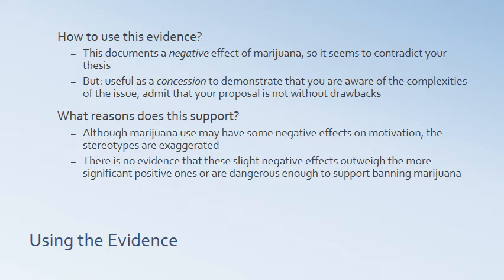But this source is useful as a concession to show that you understand the counter-arguments, that the issue is complex, and that you admit your proposal has some drawbacks or questions that need to be considered. You could say: although marijuana use may have some negative effects on motivation, the stereotypes are greatly exaggerated. And ultimately, these slight negative effects do not outweigh the much more significant positive ones, and they're not dangerous enough to support banning marijuana — since there are all sorts of things that make people less goal-oriented. It's always important to acknowledge potential counter-arguments and respond to them in a way that doesn't take away from your argument, but overall strengthens it, even while showing some complexities or possible drawbacks.